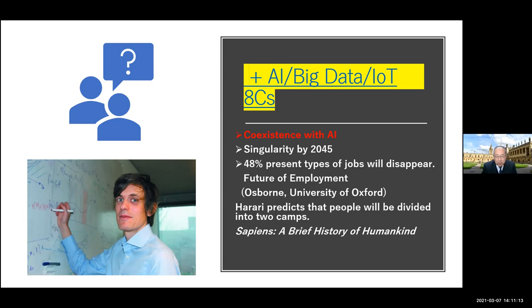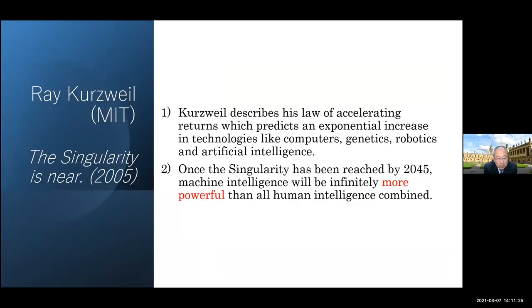So I think nowadays teachers have a heavy responsibility to teach students how to use AI and how to experience AI. Kurzweil describes his law of accelerating returns, which predicts an exponential increase in technologies like computers, genetics, robotics, and artificial intelligence.